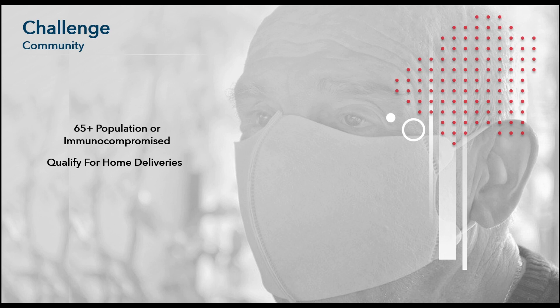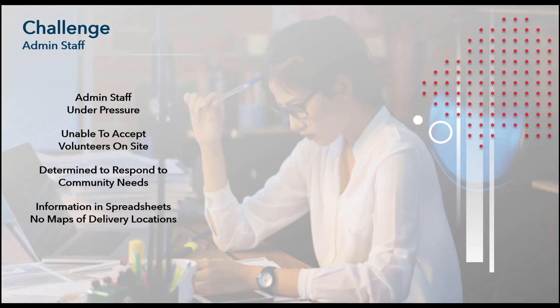There are multiple challenges faced in order to meet the needs of the community. There are specific requirements for who qualifies for home food delivery, such as the 65 and over population, or those with compromised immune systems. The admin staff at the food bank are under a great amount of pressure — they do not have the capacity to micromanage this home delivery program. They are no longer able to accept volunteers on site due to social distancing guidelines, but they are determined to respond. At this point, they only have information in spreadsheets and have no way to visualize delivery locations on a map.